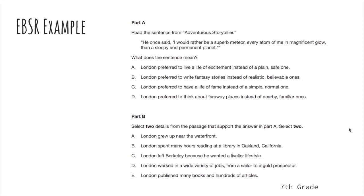Let's take a look at a seventh-grade example from the sampler. In part A, students re-read a sentence from the paragraph and choose what the sentence means, with four answer choices. In part B, it says select two details from the passage that support the answer in part A — it really emphasizes the number two to remind students to select two parts. Because there are two correct answers, there are five choices. If there's only one correct answer, they pick from just four choices. So part A asks the question, and part B backs it up with evidence from the text.